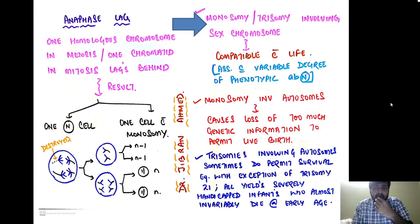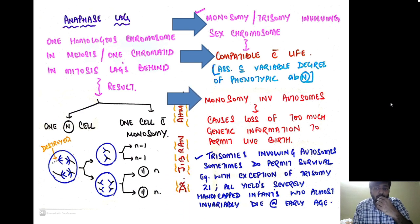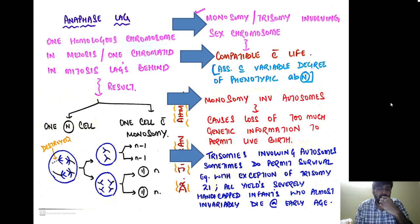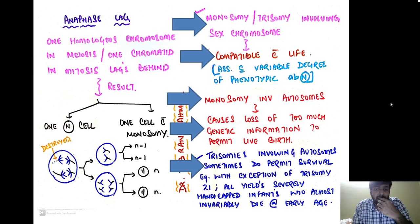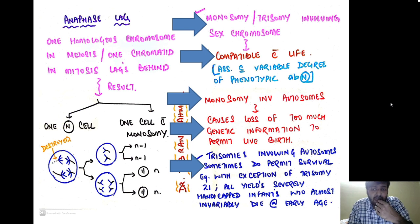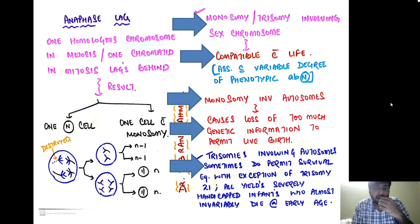Monosomy and trisomy involving the sex chromosomes are compatible with life. However, monosomy involving the autosomes causes too much loss of genetic information and is not compatible with live birth. Trisomies involving autosomes are also generally not compatible with survival, with the single exception of Down syndrome (trisomy 21), which permits survival into adulthood.